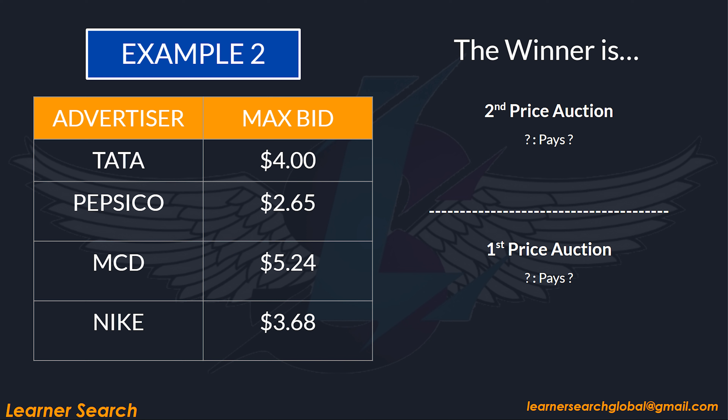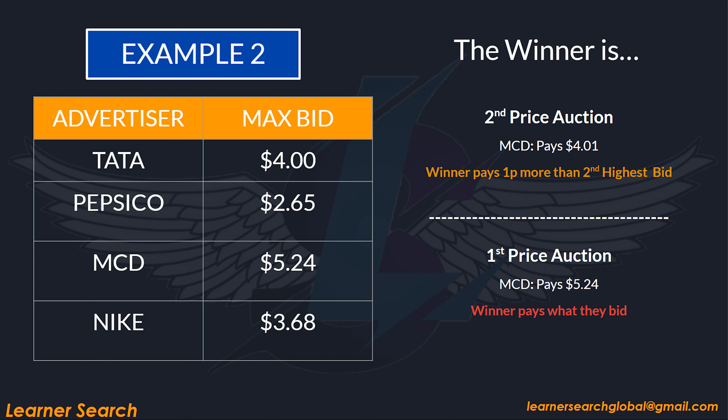In Example 2, can you guess who wins? It's MACD. In the first price auction, the clearing price stands at $5.24. In the second price auction, it's a neat $4.01.